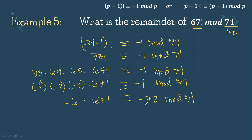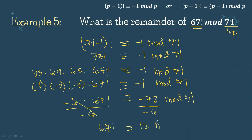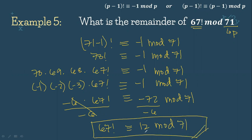Negative 6 and negative 72 are both divisible by negative 6, so divide both sides by negative 6. That gives 67 factorial congruent to negative 72 divided by negative 6, which is 12 mod 71. For example number 5, the answer is 12.